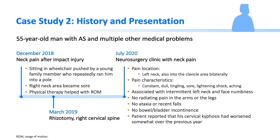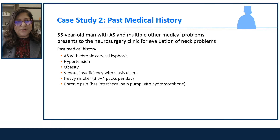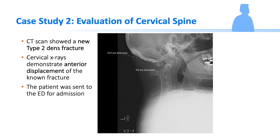There was no pain radiating to the arms or legs, no ataxia, and no bladder or bowel incontinence, but the patient noted that his cervical kyphosis had worsened. Past medical history included AS with chronic cervical kyphosis, hypertension, obesity, venous insufficiency with stasis ulcer, heavy smoking of up to three and a half to four packs per day, and an intrathecal pump with hydromorphone for chronic pain management. CT scan showed a new type 2 dens fracture, and cervical x-rays demonstrated anterior displacement. The patient was sent directly to the ED for admission.